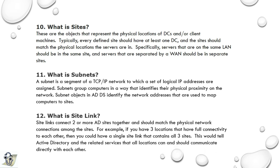Twelfth question: What is a site link? Site links connect two or more AD sites together and should match the physical network connections among the sites. For example, if you have three locations that have full connectivity to each other, you could have a single site link that contains all three sites. Basically, this tells how Active Directory should communicate directly with each other.